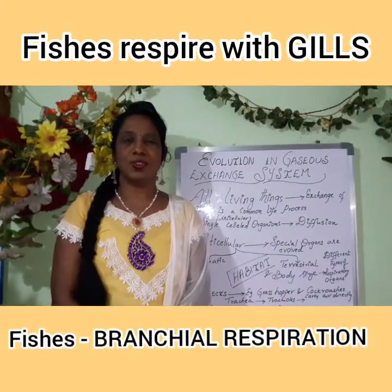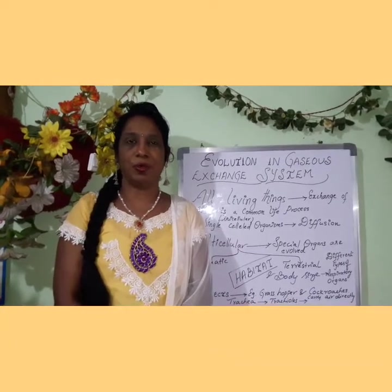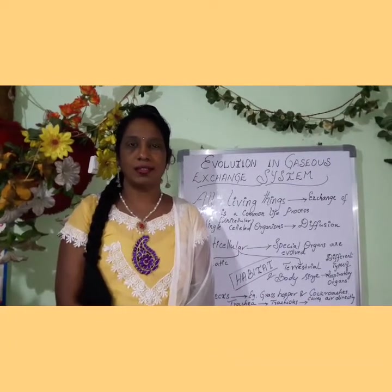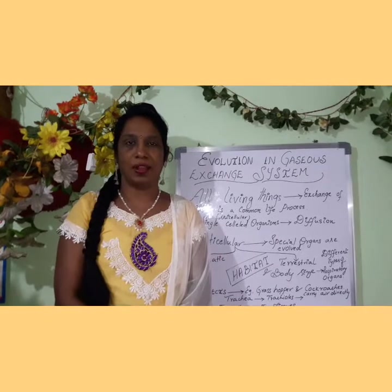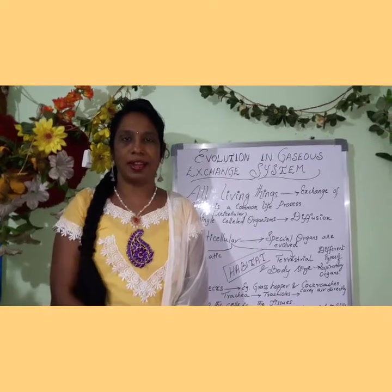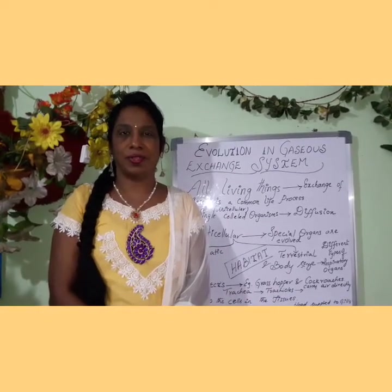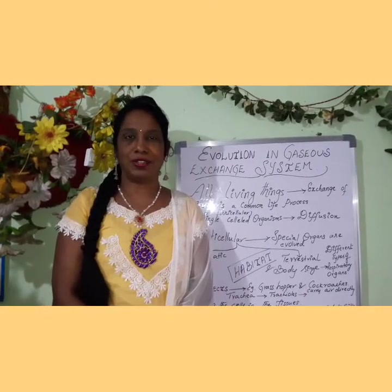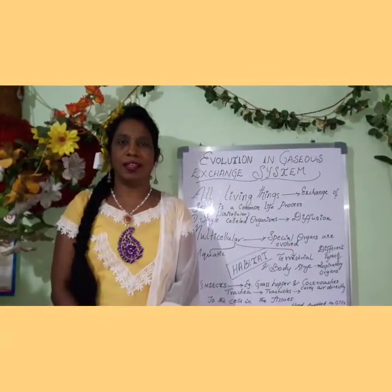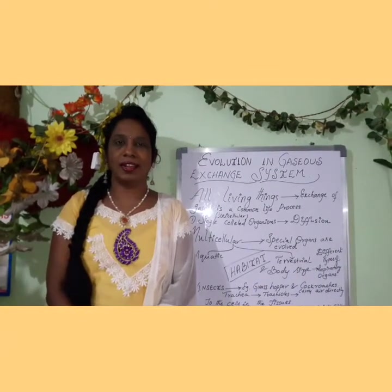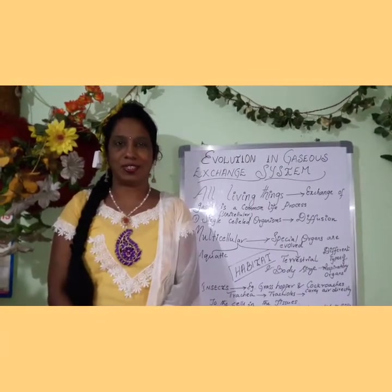The trachea consists of a series of fine branches of tubules called tracheoles, which carry air directly from the cells to the tissues.